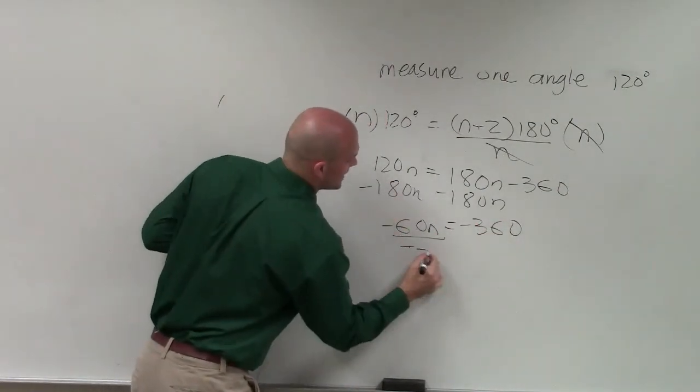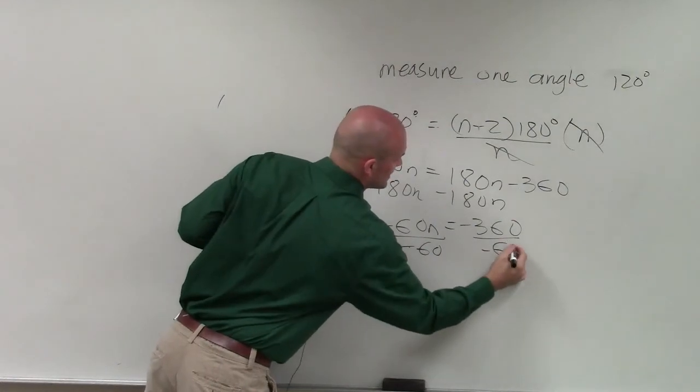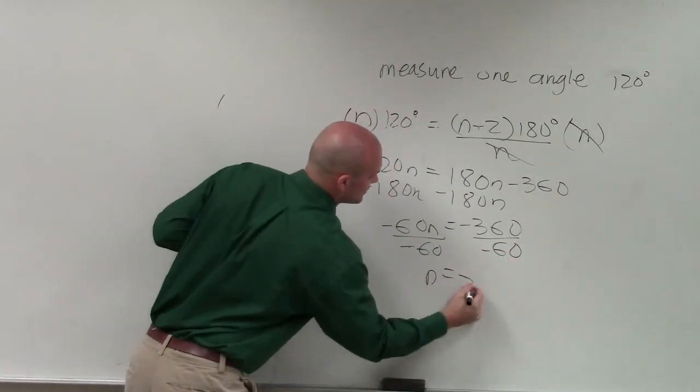Stay. Negative 60 divided by negative 60. n equals 6.